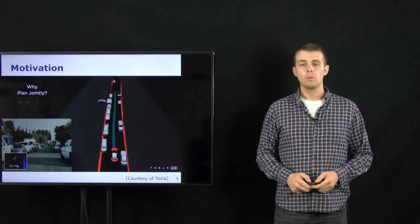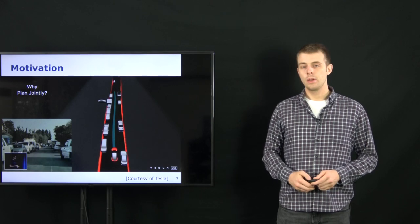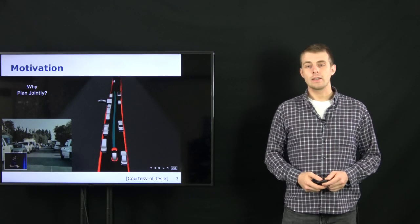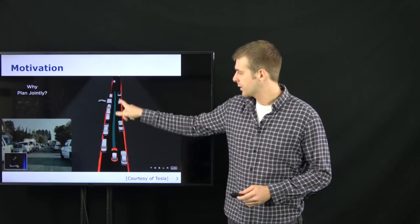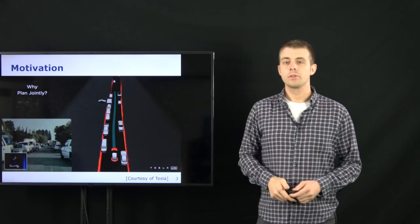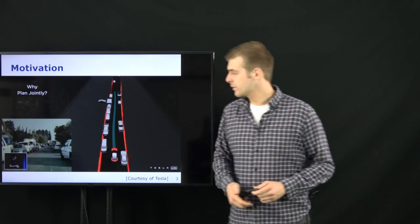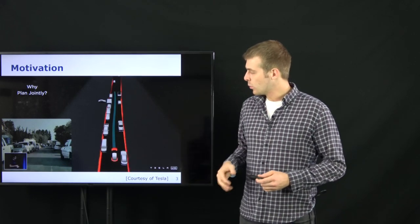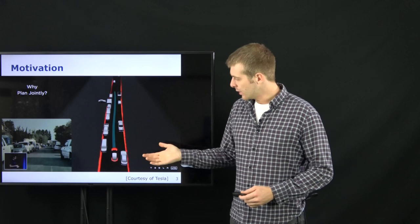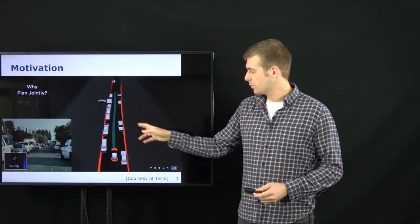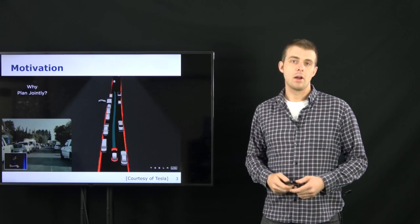Before we start, I would like to motivate the topic and show you an example of how behavior estimation works in practice. This example is from the recent Tesla AI Day. You will see on the right the autonomous vehicle in red with its planned path and the perceived environment. The car is equipped with sensors — in this case cameras, just the front camera — and this is what the car thinks about its environment.